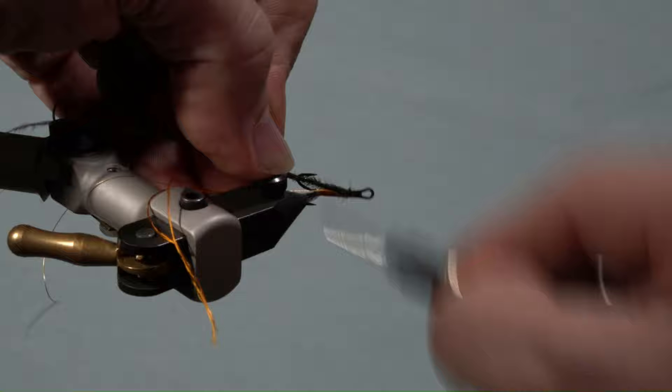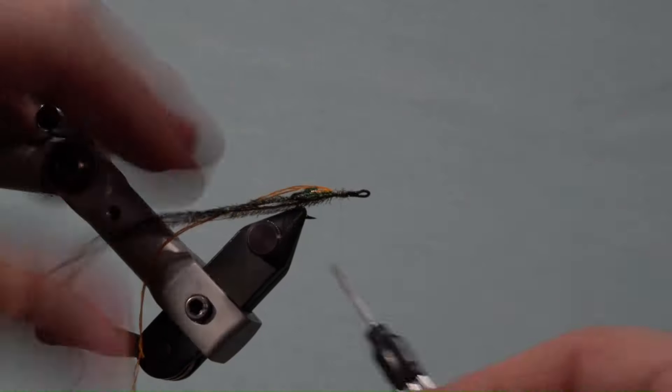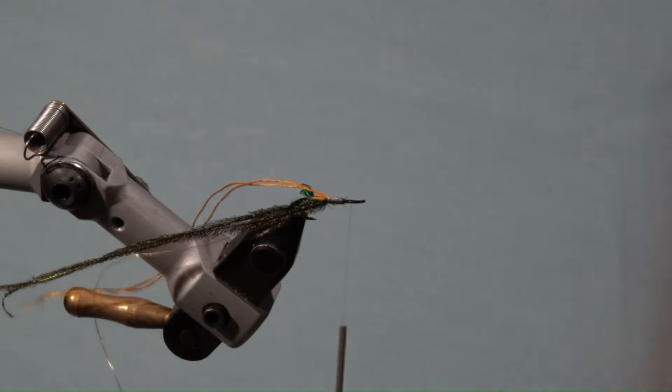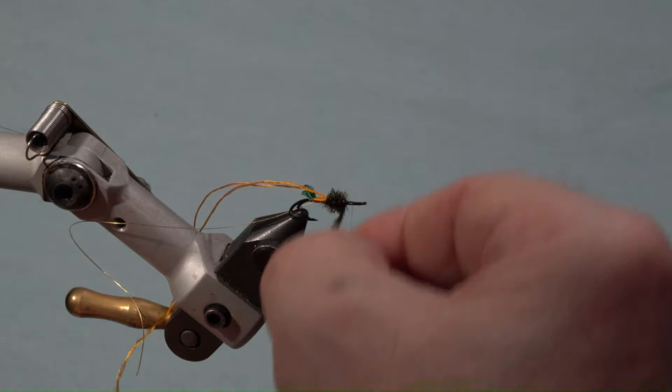Next, take two strands of peacock curl, trim the ends even and secure from underneath the hook to the end of the silk body and bring the thread forward. Wrap the curl forward to cover the threaded area and secure on the bare portion of the hook.